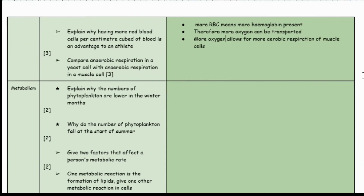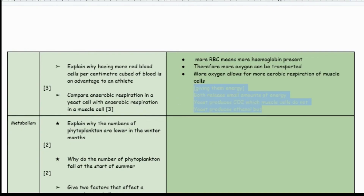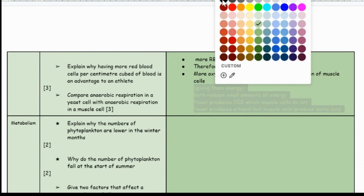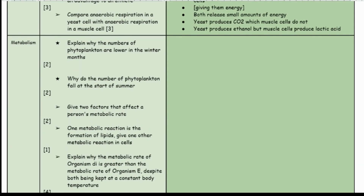Compare anaerobic respiration in a yeast cell with anaerobic respiration in a muscle cell. In terms of similarities, both release small amounts of energy compared to what they could release with aerobic respiration. For differences: yeast produces carbon dioxide but muscle cells do not. Yeast produces ethanol, but muscle cells only produce lactic acid.